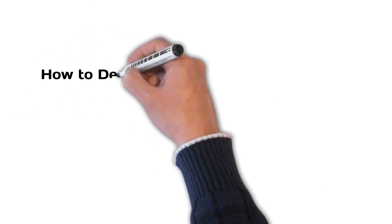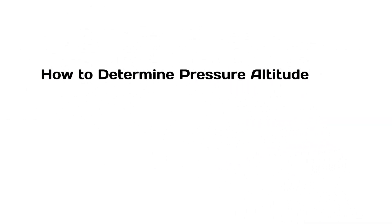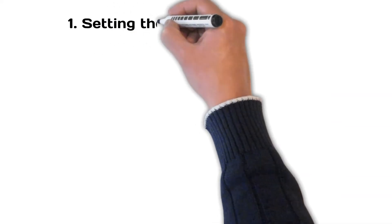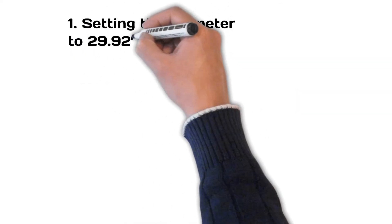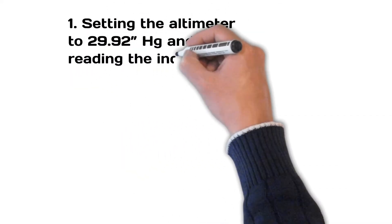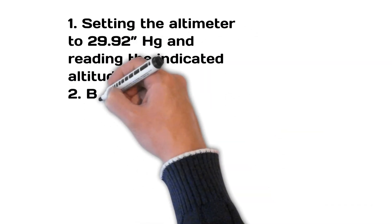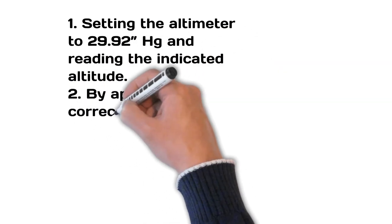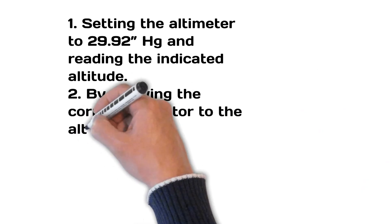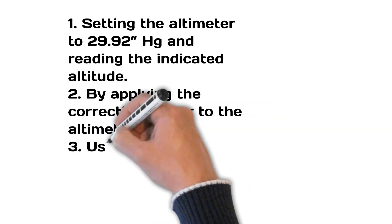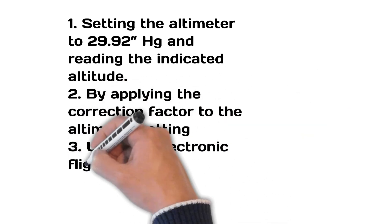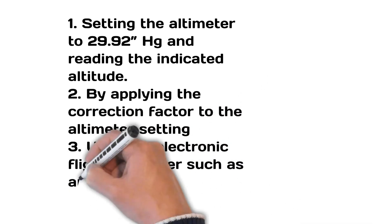Pressure altitude can be determined in three ways. First is setting the altimeter to 29.92 and reading the indicated altitude shown on the altimeter. Second is by applying the correction factor to the altimeter setting. Third is to use an electronic flight computer, such as an E6B calculator.